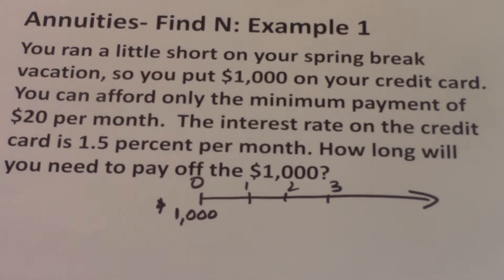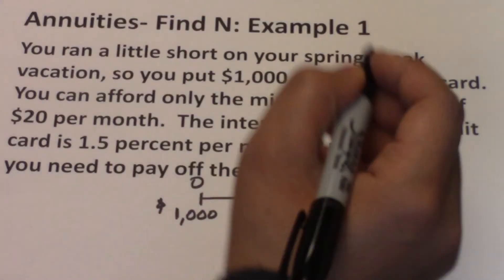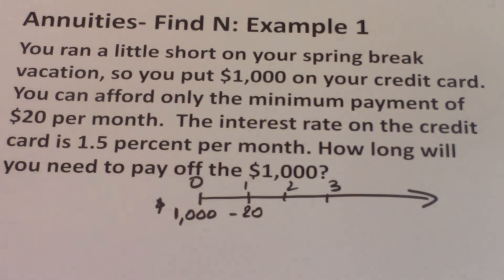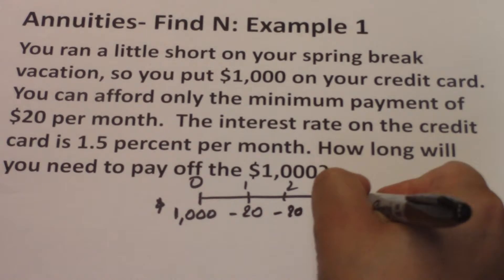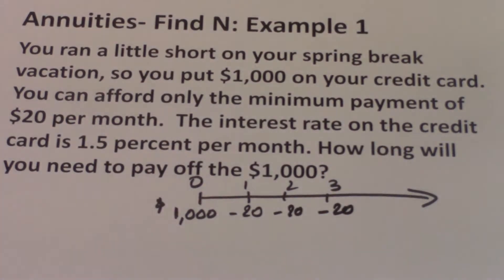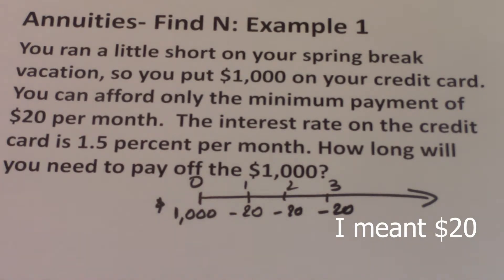After that, you can afford the minimum payment of $20 per month. So that $20 is going to be a cash outflow to you — you're going to be sending $20 each month to the credit card company. I'll show it as a negative number: negative $20 each month. So here it shows inflow and outflow: you got $1,000 today as an inflow, and then you're paying $20 each month later on as an outflow.